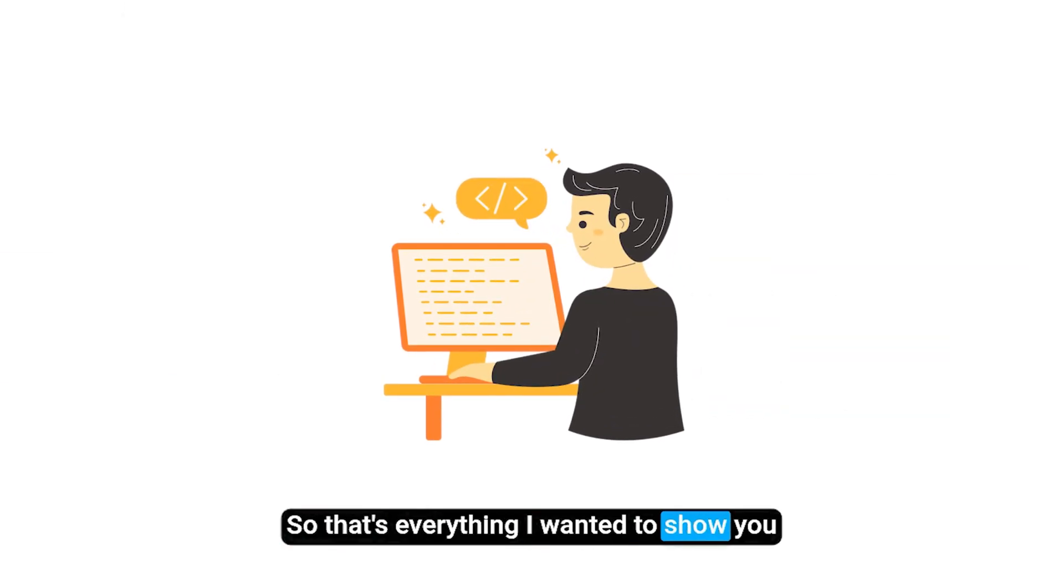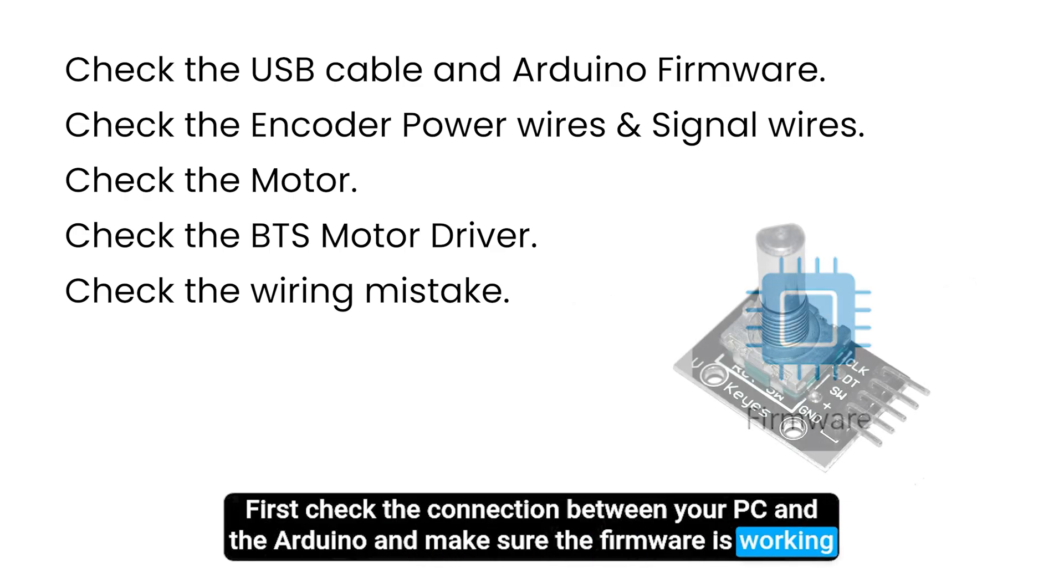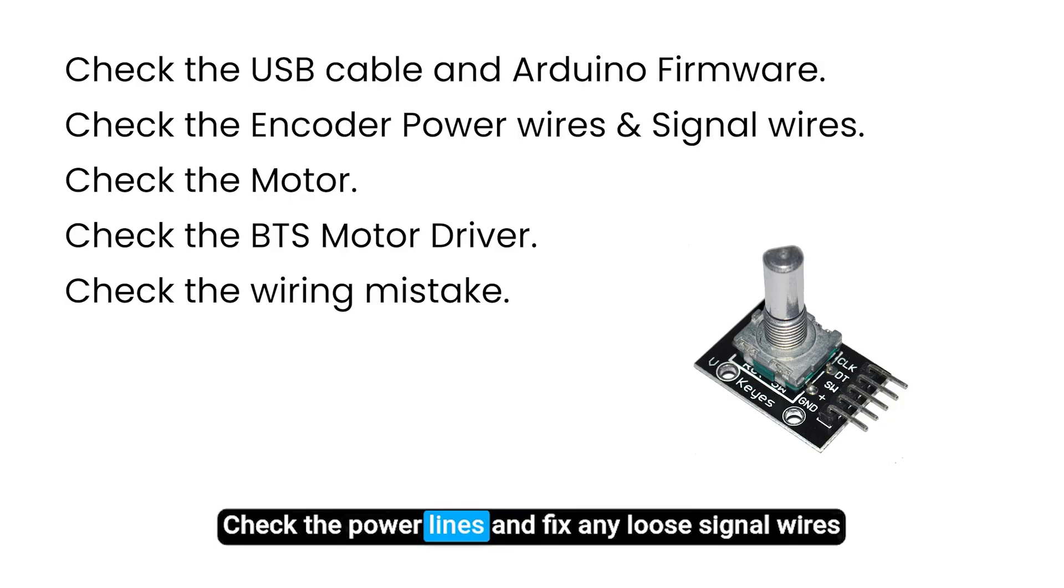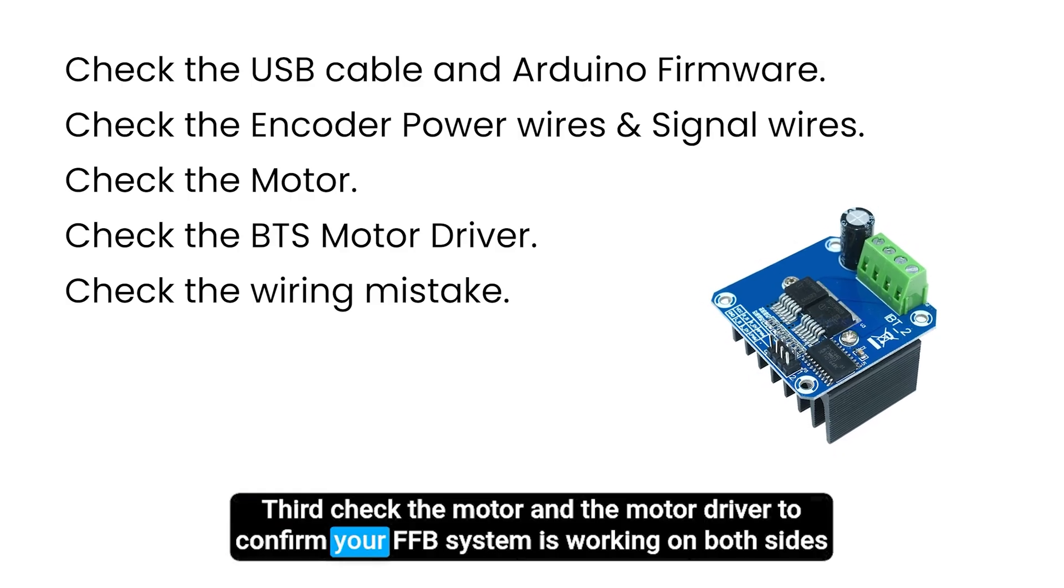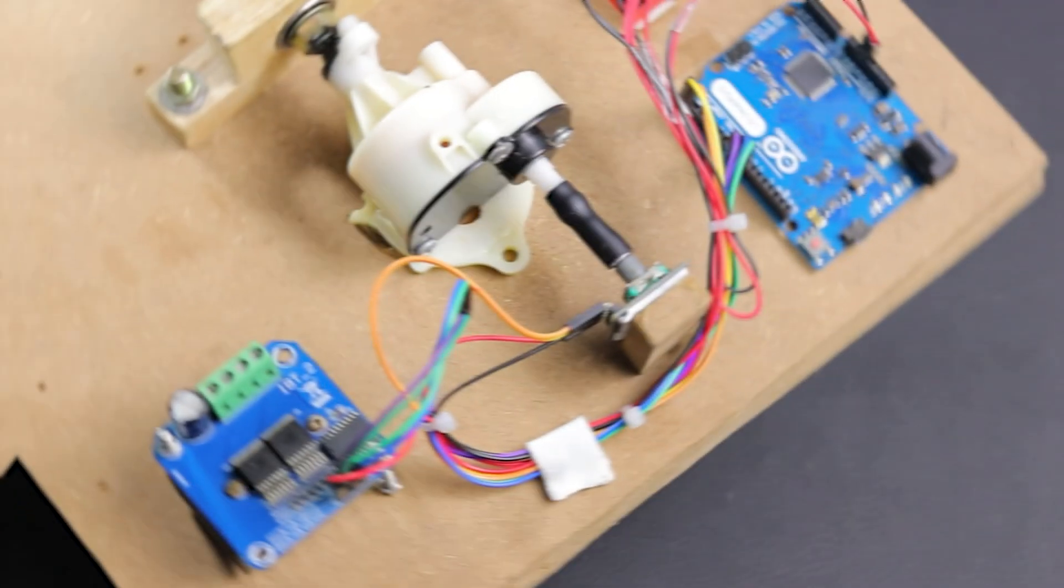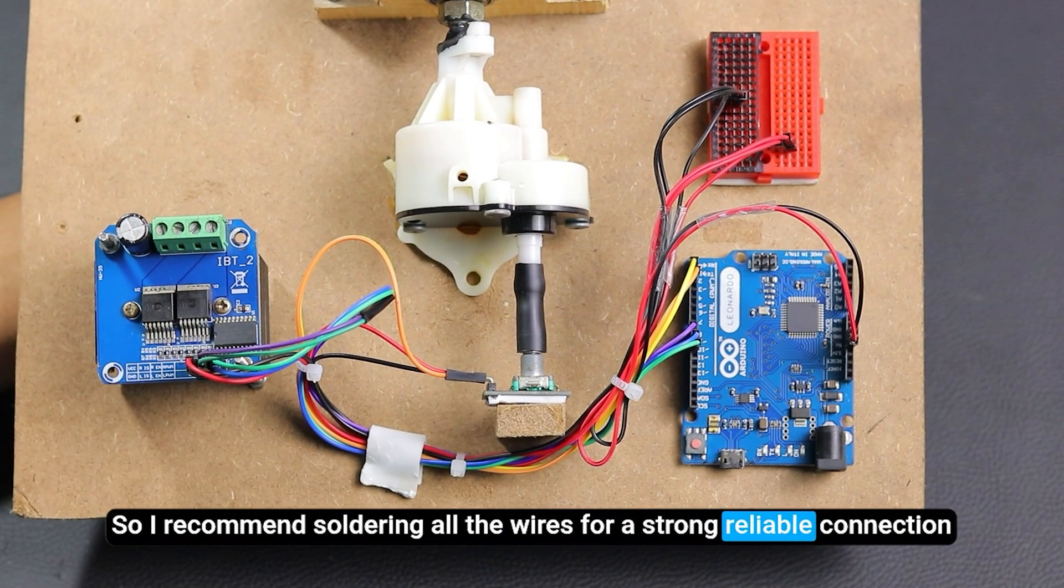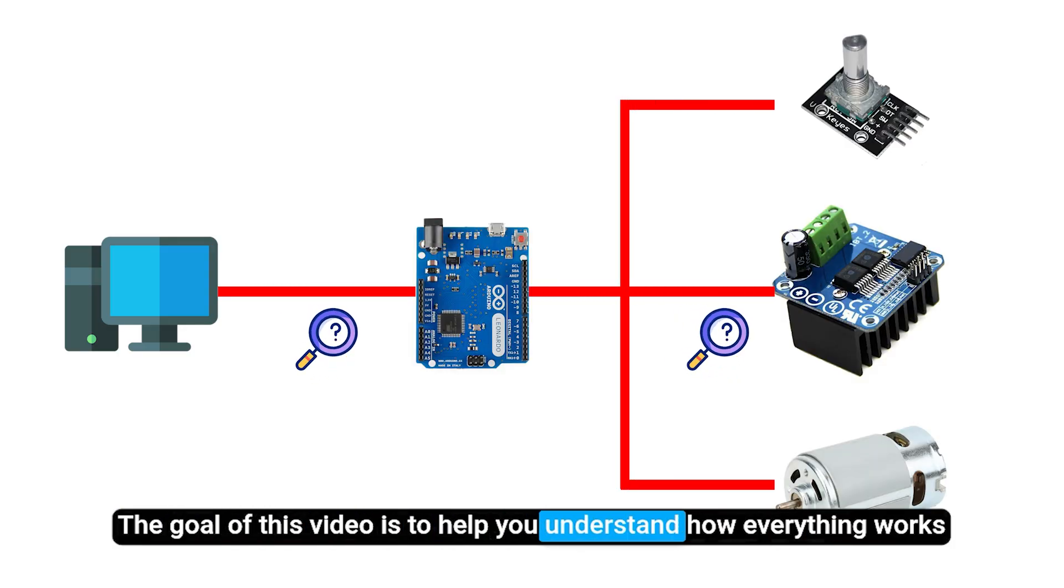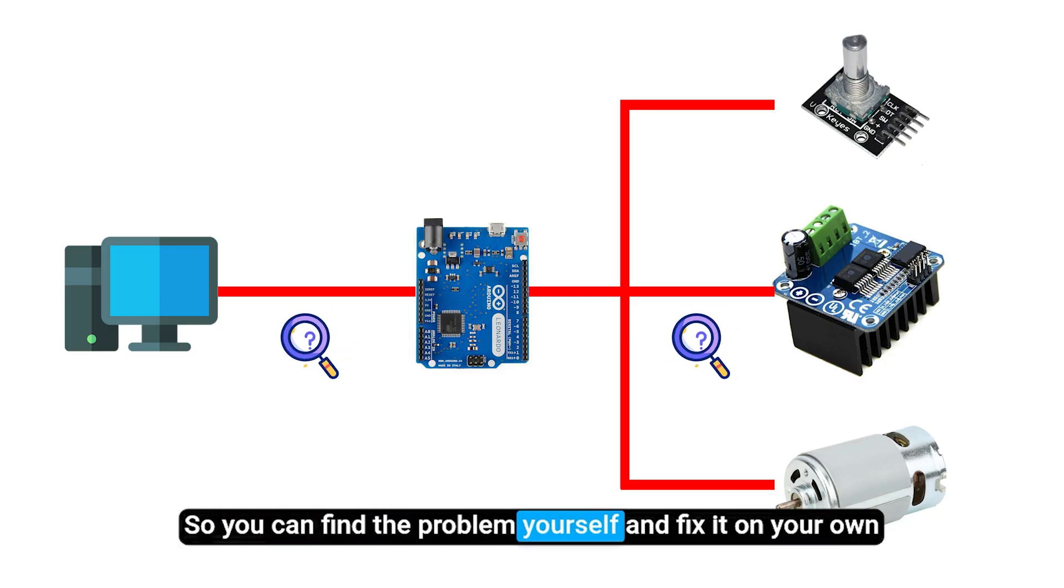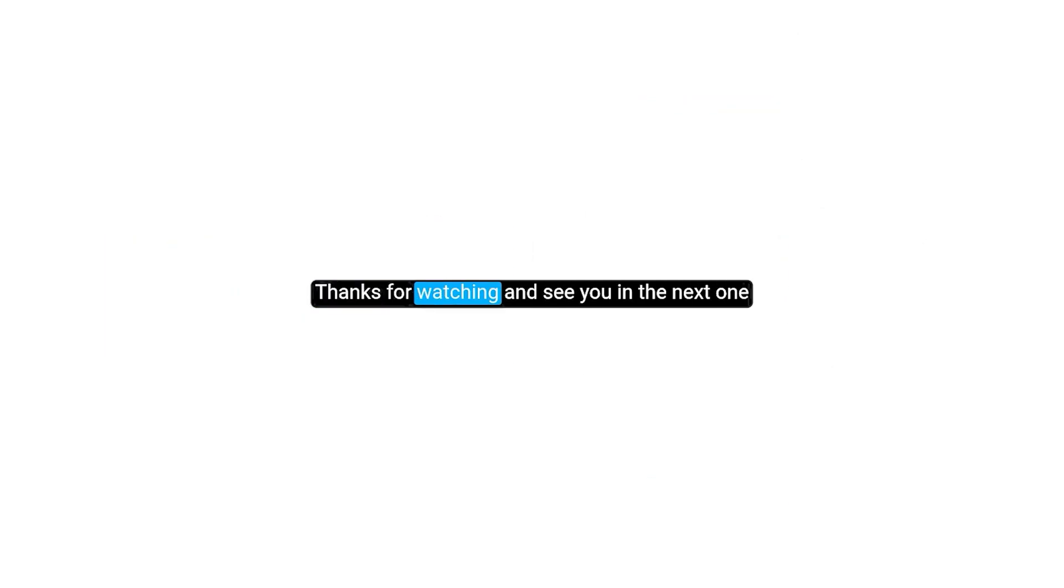So that's everything I wanted to show you in this video. Just a quick reminder of what we covered. First, check the connection between your PC and the Arduino, and make sure the firmware is working. Second, test the encoder, check the power lines, and fix any loose signal wires. Third, check the motor and the motor driver to confirm your FFB system is working on both sides. Most of these problems come from wiring issues, so I recommend soldering all the wires for a strong, reliable connection. I explained the whole system from start to end. The goal of this video is to help you understand how everything works, so you can find the problem yourself and fix it on your own. I hope this helped you find your problem and fix it. Thanks for watching, and see you in the next one.